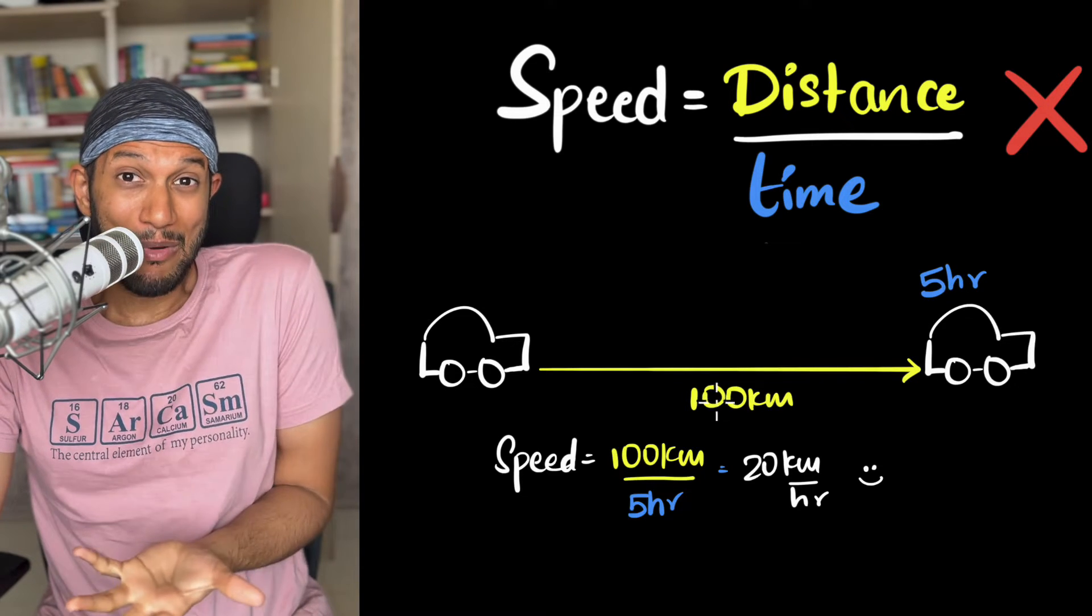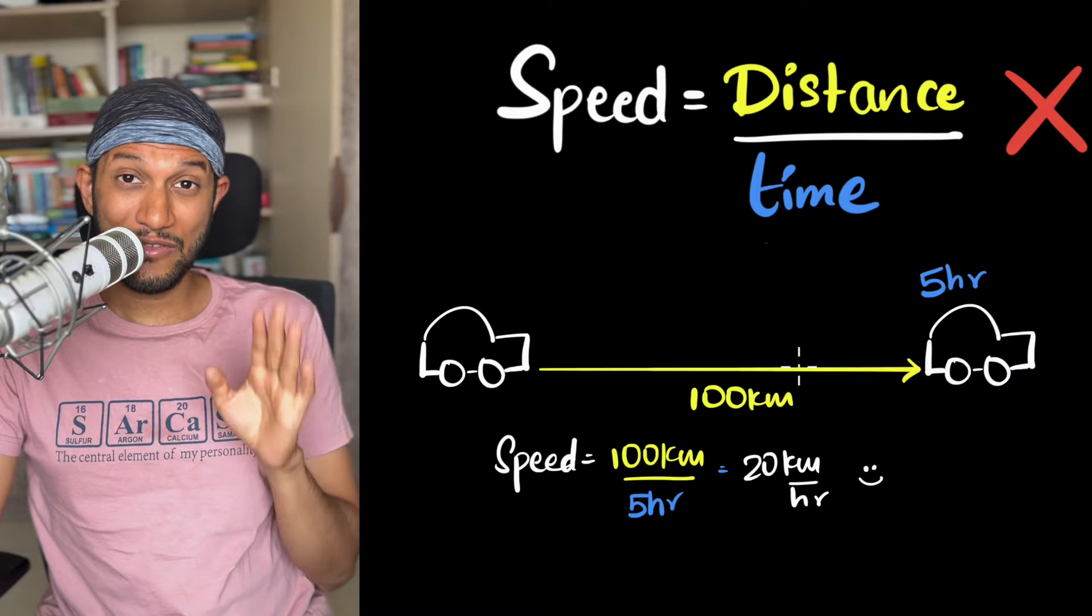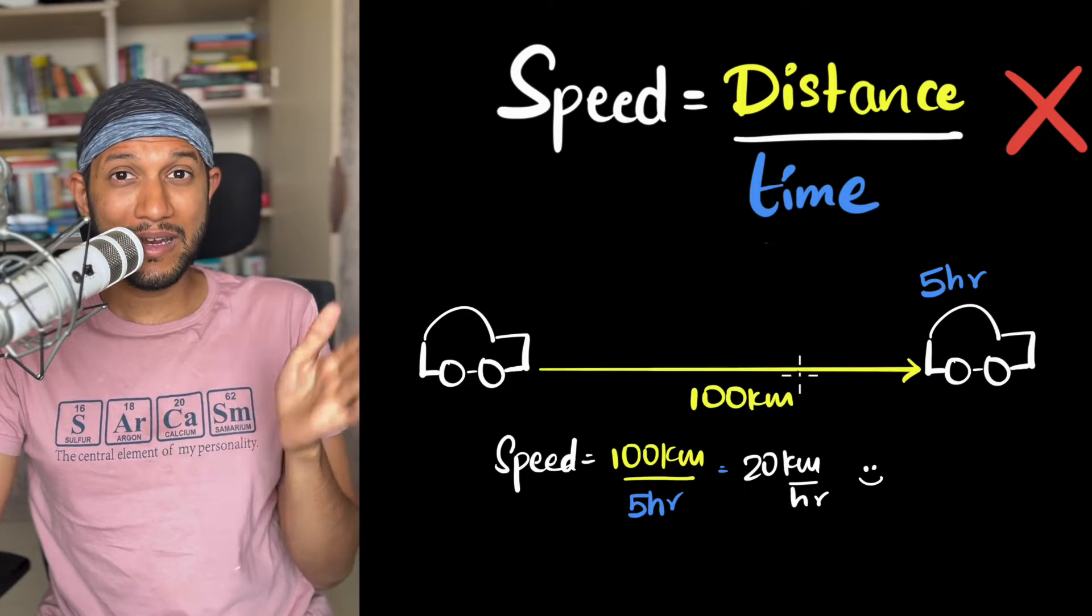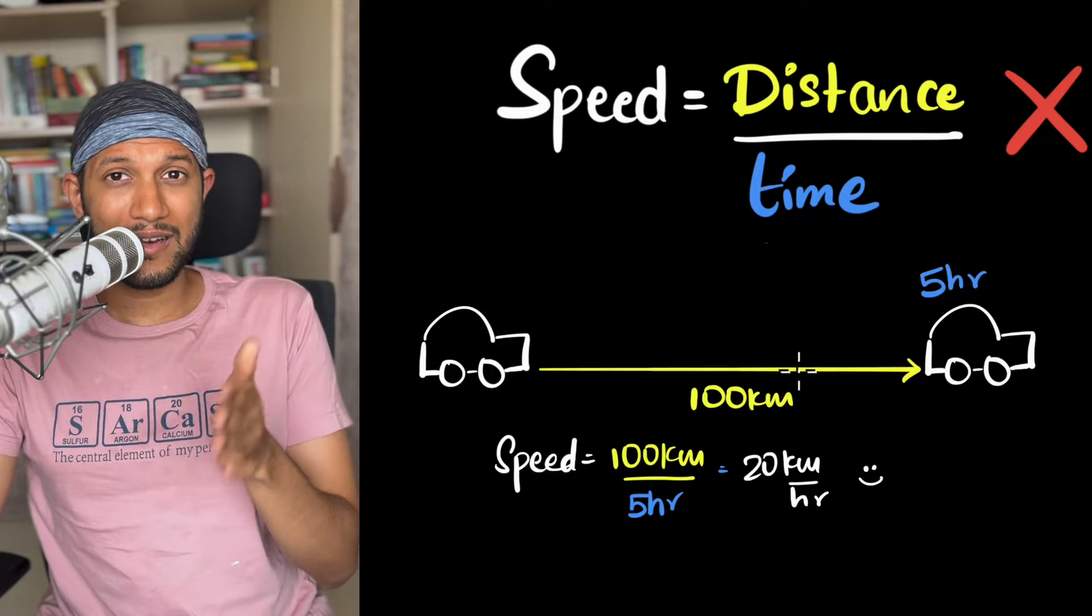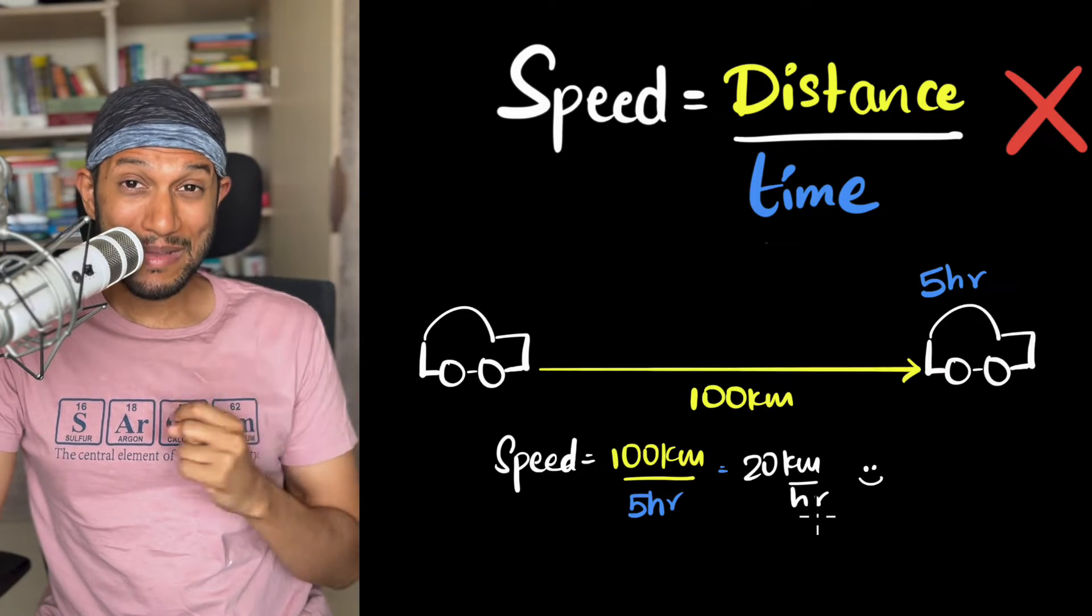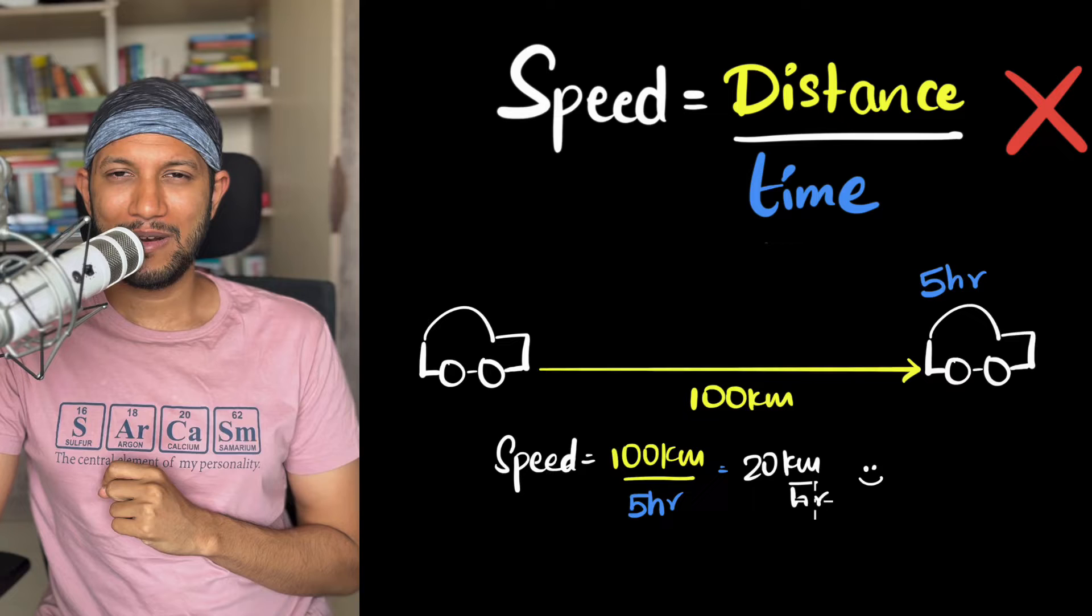It's totally possible that the car might have traveled 90 kilometers in the first one hour and then probably it slowed down and then it traveled lesser and lesser distance. So then what does it mean to say that the speed of this car is 20 kilometers per hour?